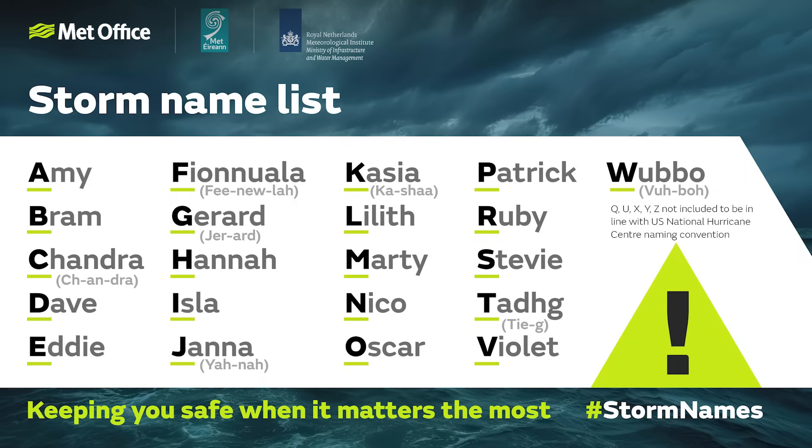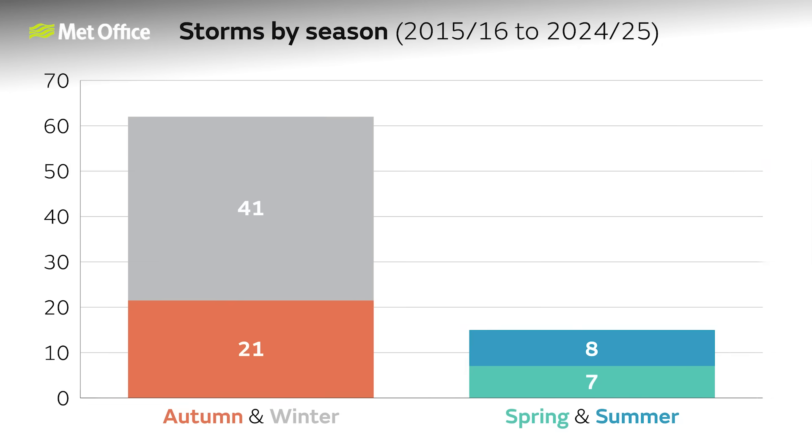In this video, we'll try and answer that question. Each year, in early September, we release the names of the storms for that season, because the 1st of September is the date when, as meteorologically minded folks say, autumn begins. The statistics clearly show that named storms are far more common in autumn and winter than they are in the spring and summer.